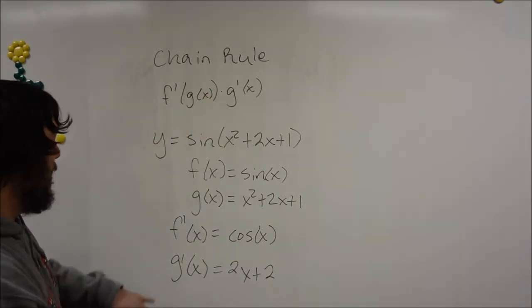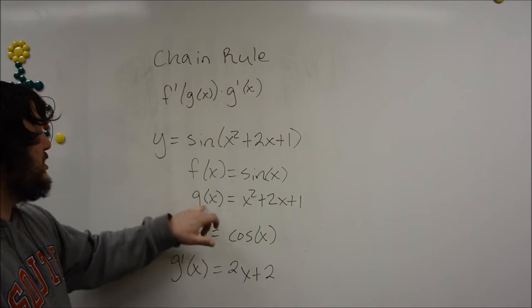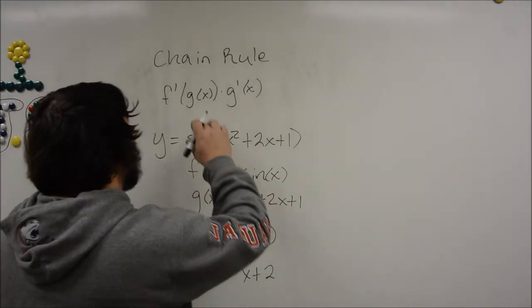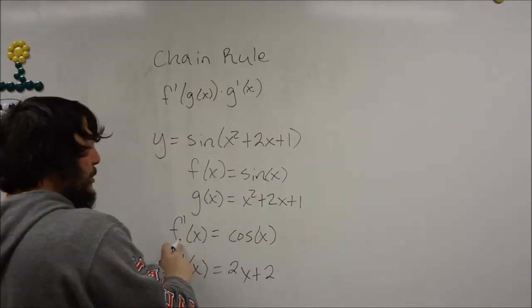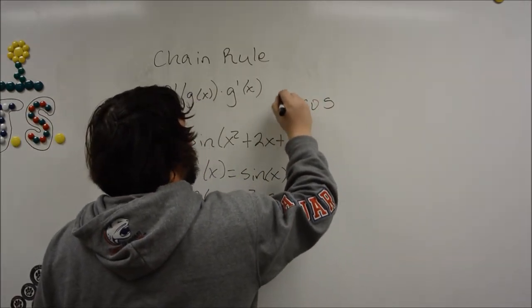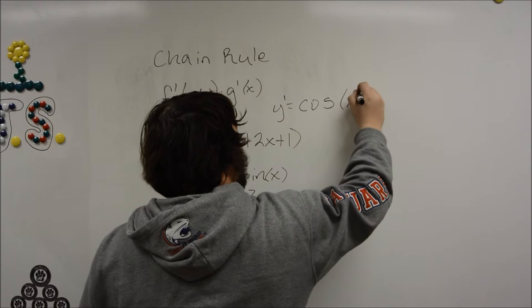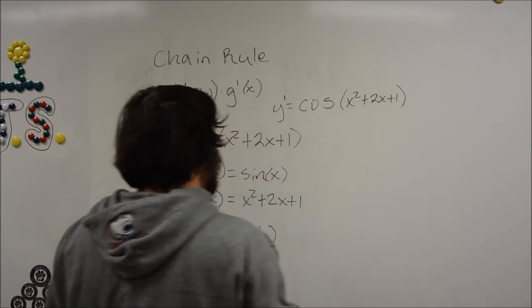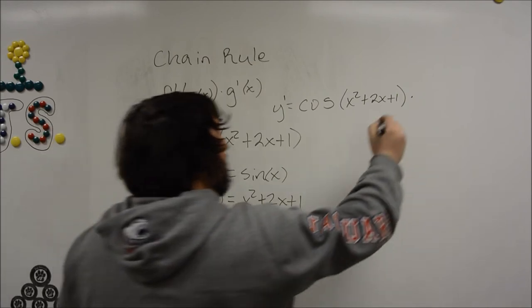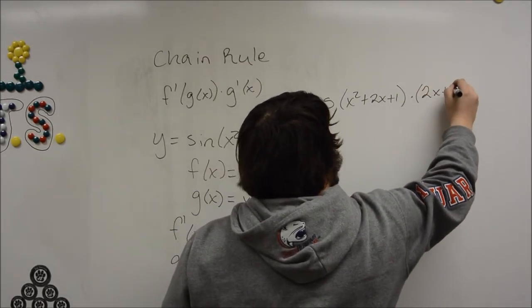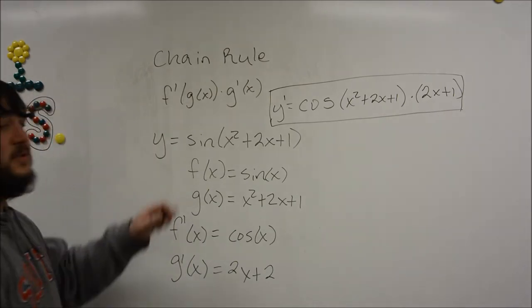So if we look back at our general form, instead of just f prime of x, it's going to be a composition function of f prime of x with g of x right here. So instead of putting x in here, we're going to put g of x. So we look at f prime of x, which is cosine, and instead of x, we're going to put g of x in there. And then we're going to multiply it with g prime of x, which is right here. So we have the derivative of the original function using the chain rule.